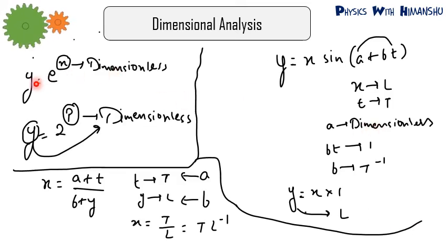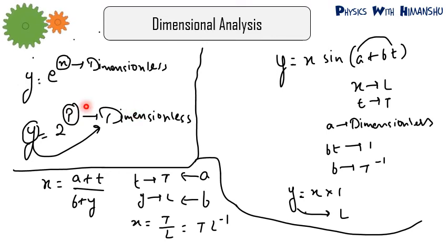Remember: if y = e^x, then anything in the power of e must be dimensionless. Similarly, for y = 2^p or 3^p or 4^p, the powers are always dimensionless, because the base is just a number.